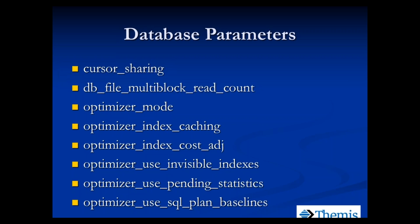There are parameters related to Oracle 11g features like invisible indexes and pending statistics. In 11g, you can create an invisible index and test it within your own session without affecting other users. Other users' optimizer won't consider invisible indexes. Within your session, you can set a parameter to have the optimizer consider invisible indexes — useful for testing a new index to see the impact. Typically, you set this at the session level, not the system level, to avoid unintended plan changes for all users.